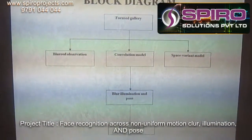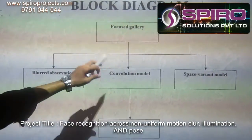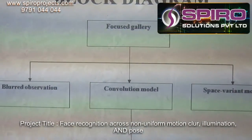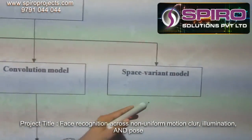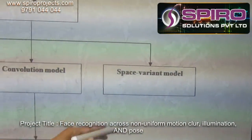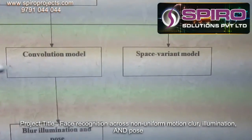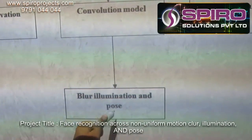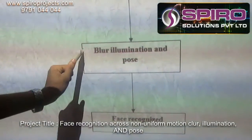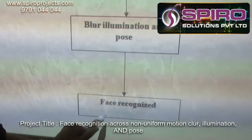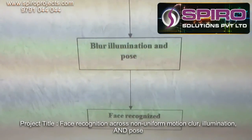This is the block diagram. It takes a focused image as a focused gallery input, and it is converted into three modules: blurred observatory, convolution model, and space-invariant model. The image passes through all these stages and we get an output covering blurred illumination and pose. Using this, we recognize the face and determine which is the authenticated image and which is not.